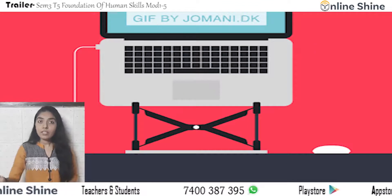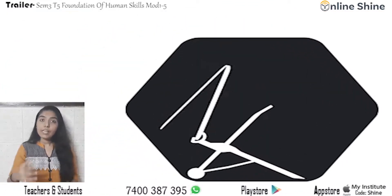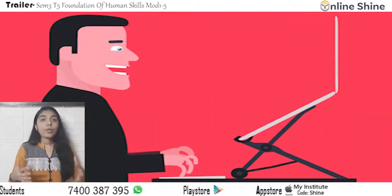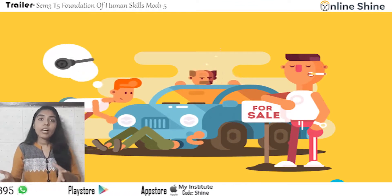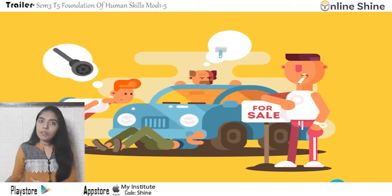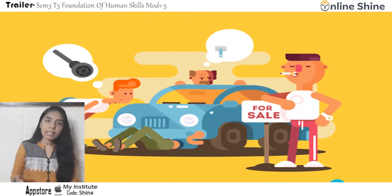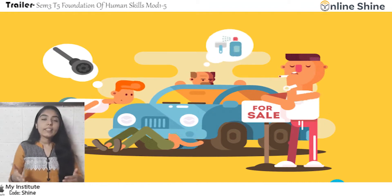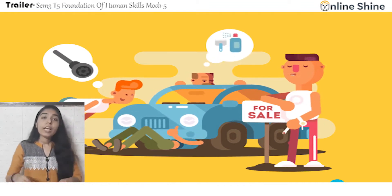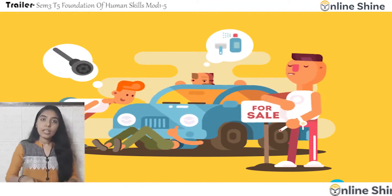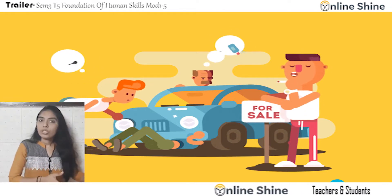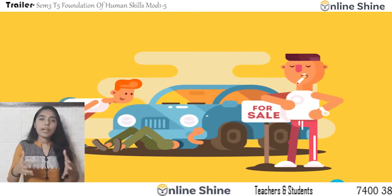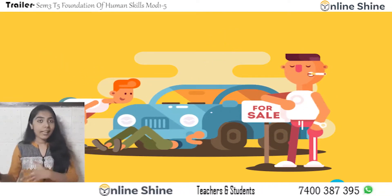The next point is that our attention goes where our interest is, and we receive information according to our interests. For example, if your car has a problem, a car mechanic's interest will be in examining the machine and figuring out what is wrong with it, rather than paying attention to something else.